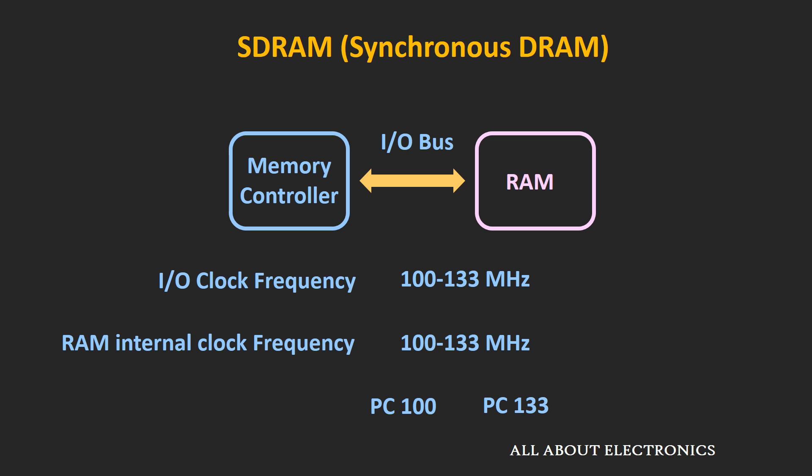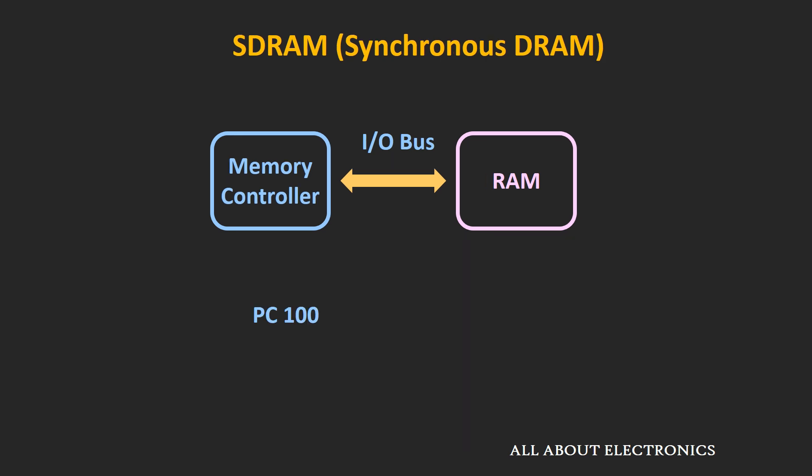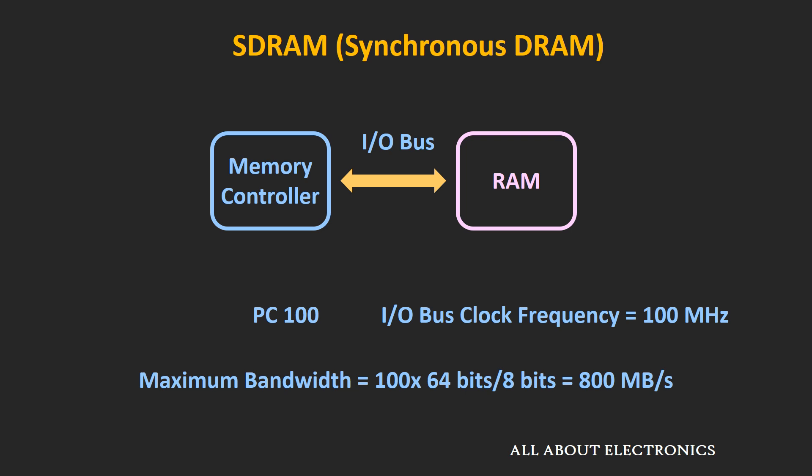Suppose the internal clock frequency of the RAM is 100 MHz, then the IO clock frequency is also 100 MHz. Generally, synchronous DRAM operates in the range of 100 to 133 MHz. If you find PC100 on an SDRAM module, it means the IO bus clock frequency is 100 MHz. With a 64-bit wide bus, the data rate is 100 MHz × 64 bits ÷ 8 = 800 Mbps.